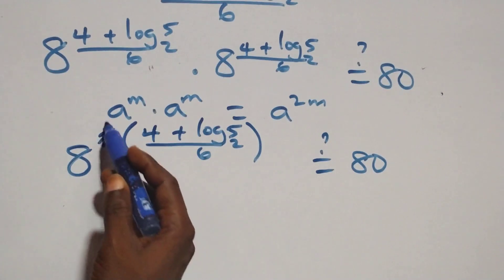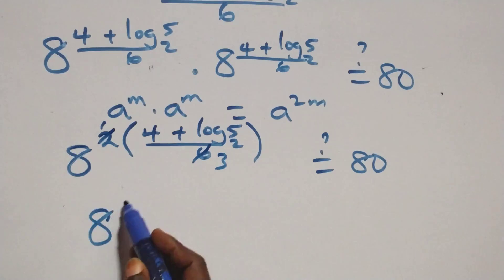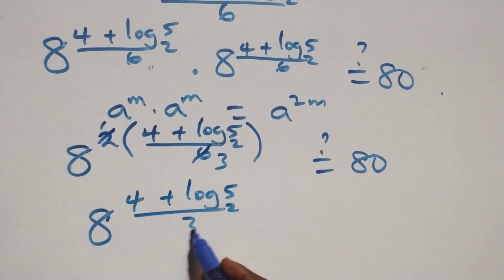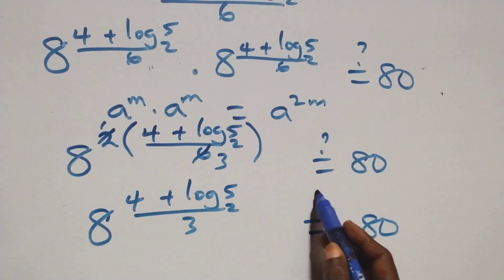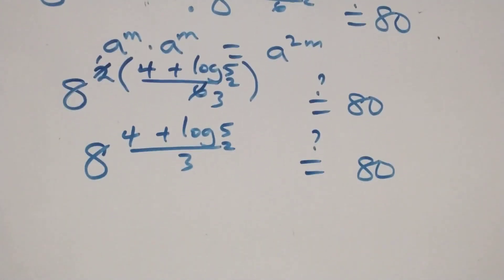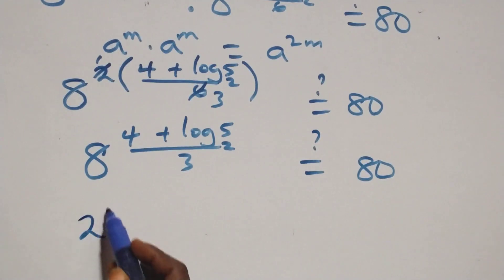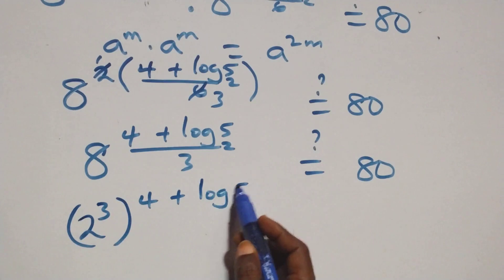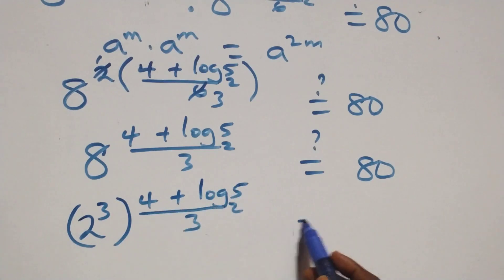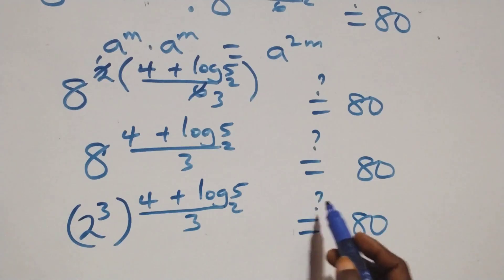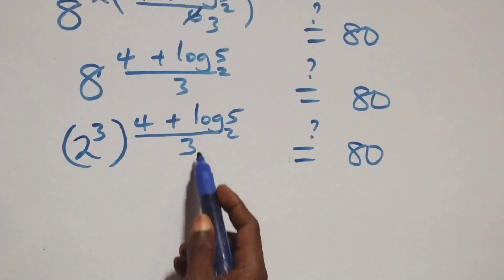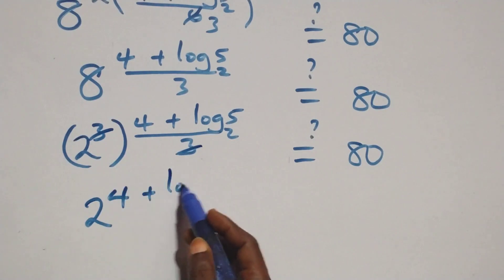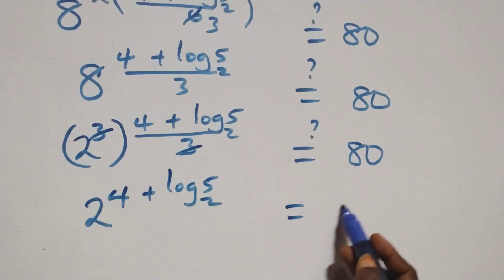This part multiplies: 2 times 1 and 2 times 3, giving us 8 raised to the power (4 plus log base 2 of 5) raised to 1 over 3, equals 80. Then we express 8 as 2 cubed, raised to the power (4 plus log base 2 of 5) raised to 1 over 3, equals 80. The 3 exponents cancel and we have 2 raised to power (4 plus log base 2 of 5) equals 80.